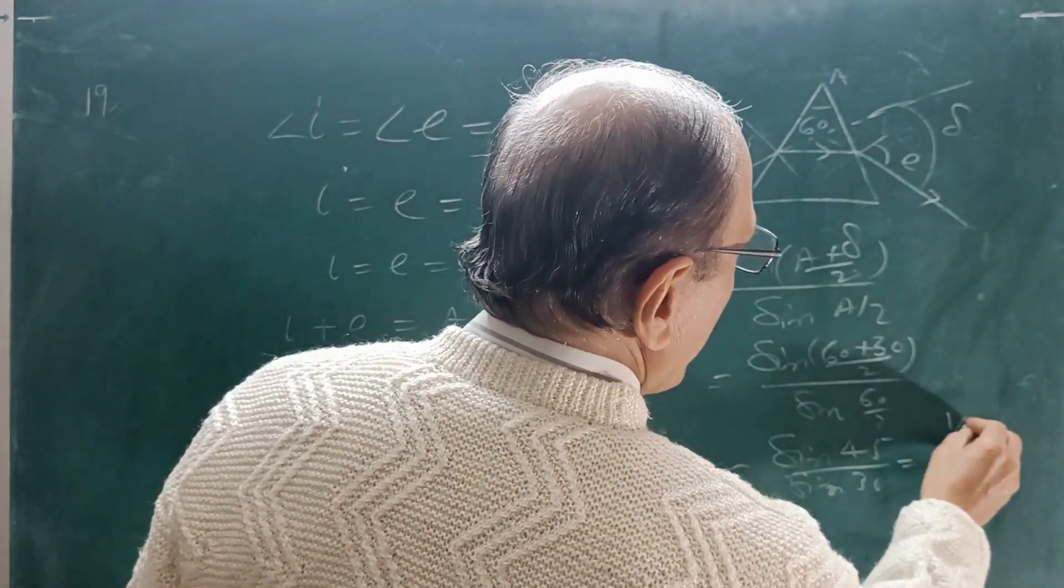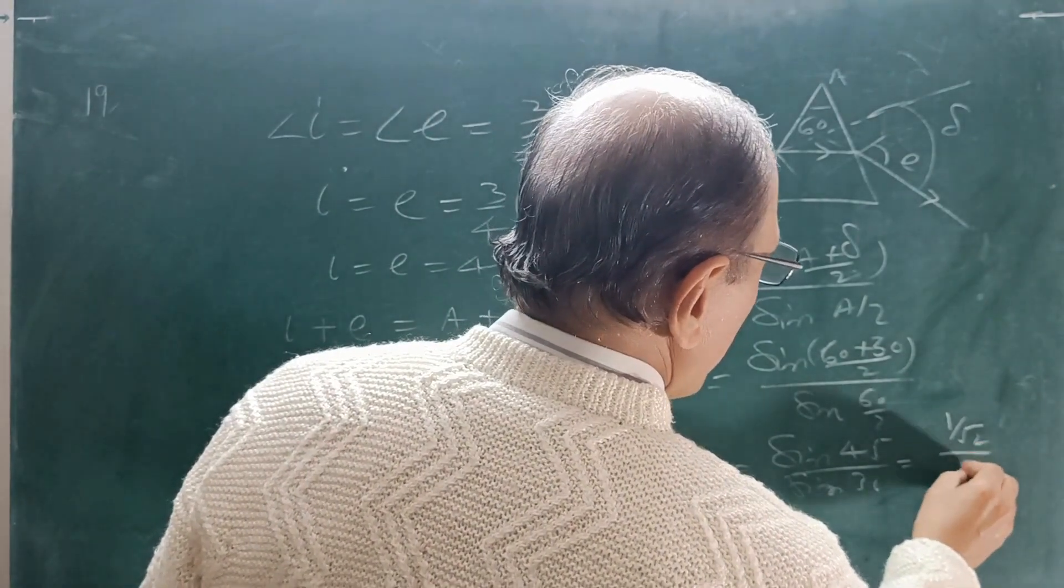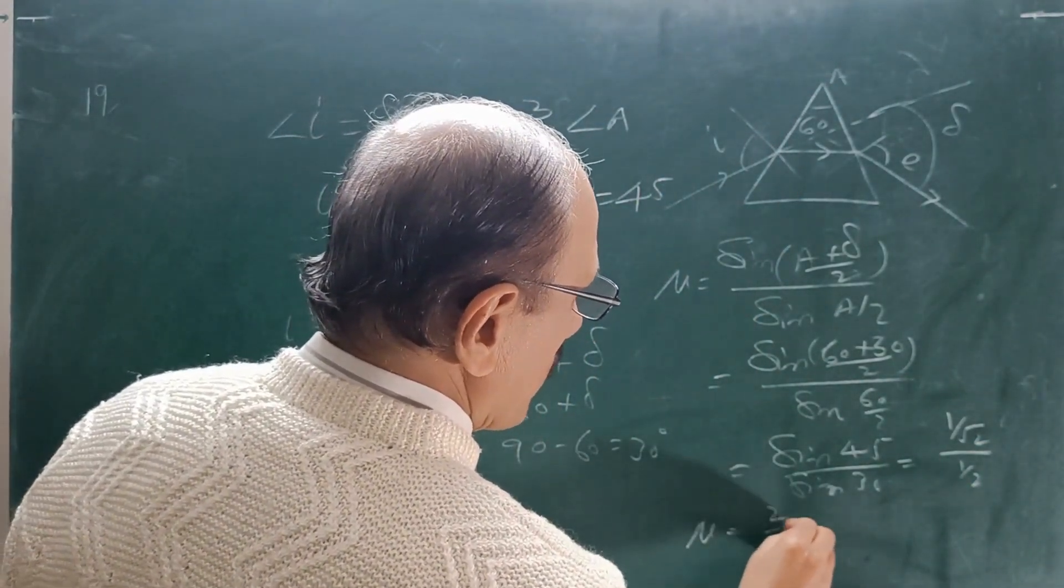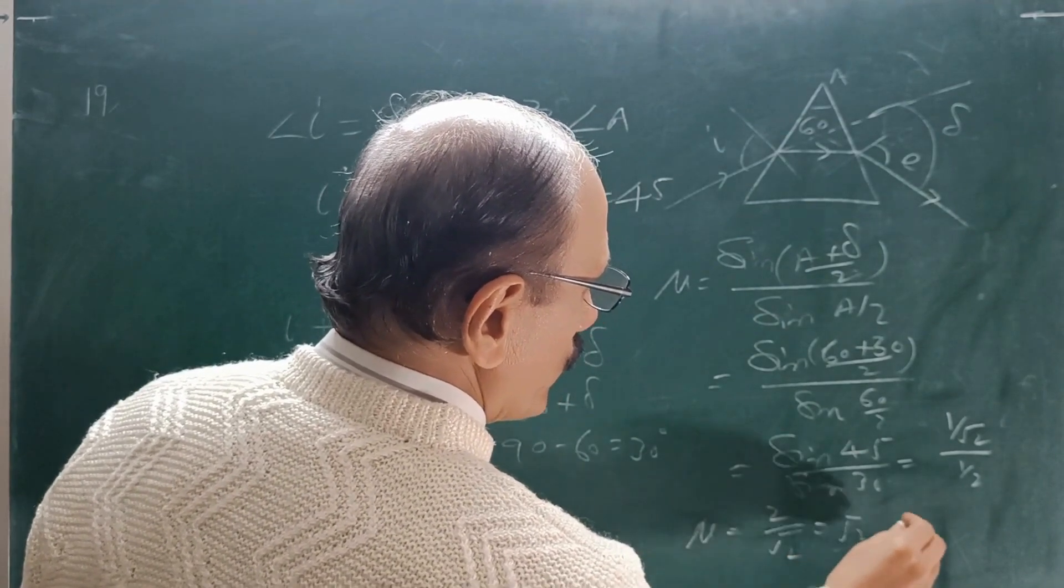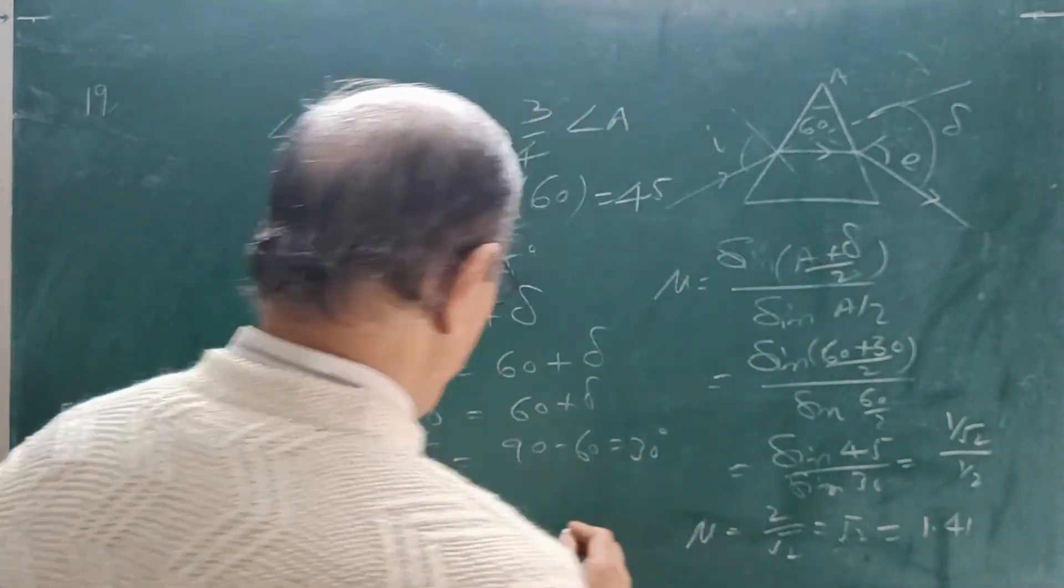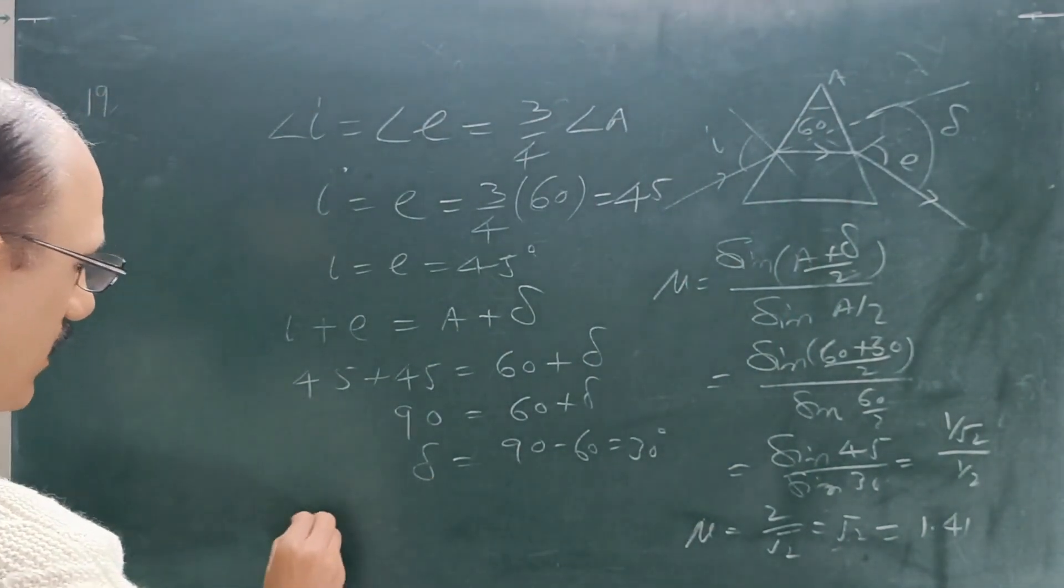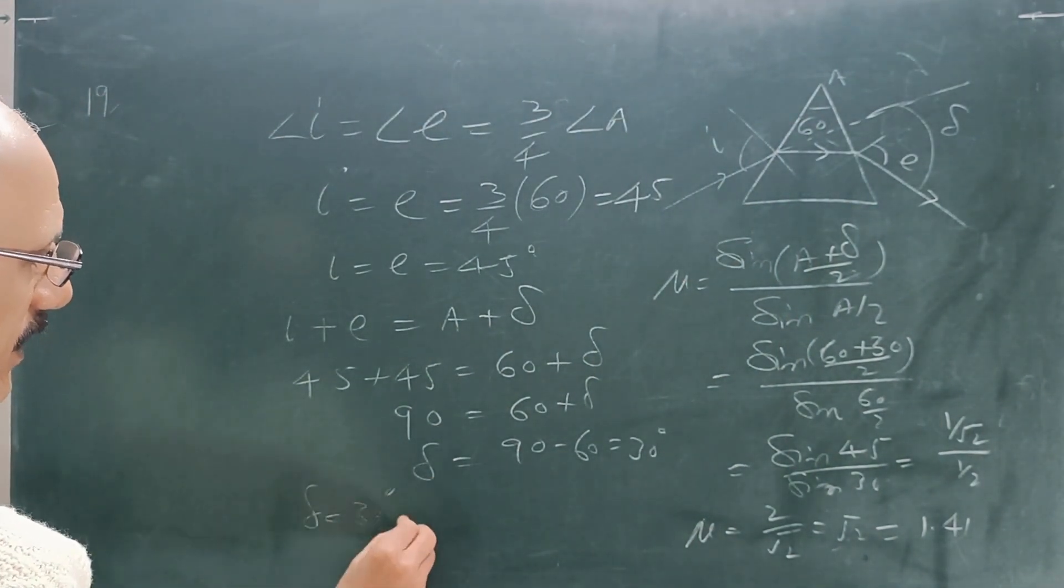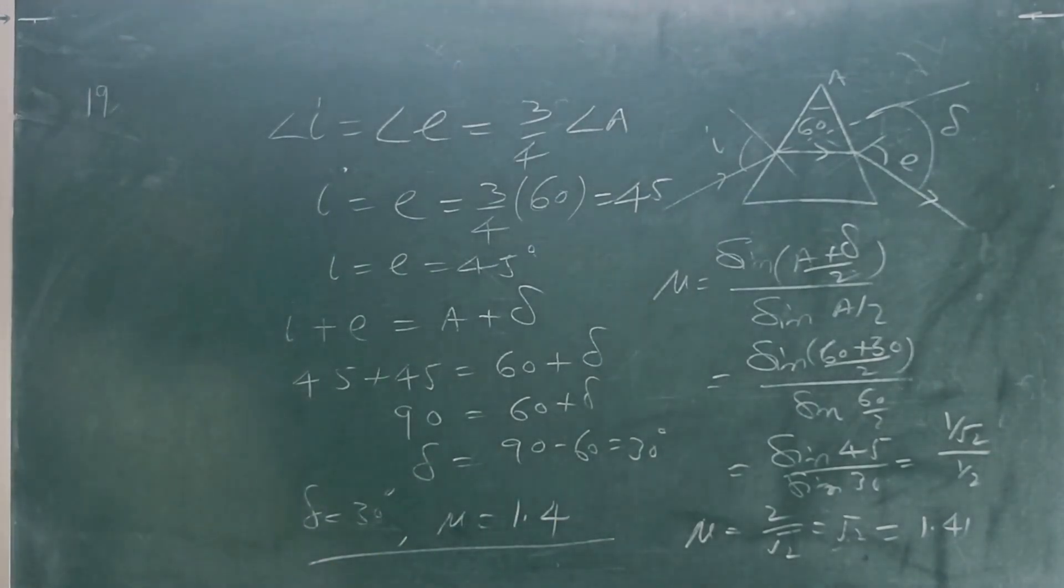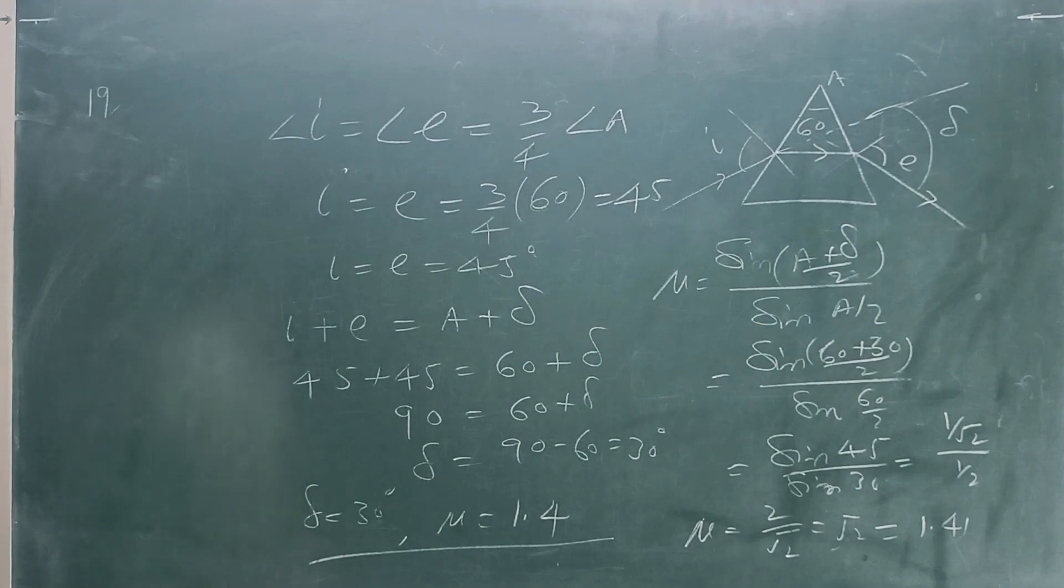Now as refractive index is concerned, mu equals to sine of A plus delta by 2 upon sine A by 2. So this is sine of 60 plus 30 divided by 2 upon sine 60 by 2. So this is sine 45 upon sine 30, that is 1 by root 2 divided by 1 by 2. So mu equals to 2 divided by root 2, that is root 2, that is 1.41. So you can say delta equals to 30 degree and mu equals to 1.4. So this is the answer of 19th question.